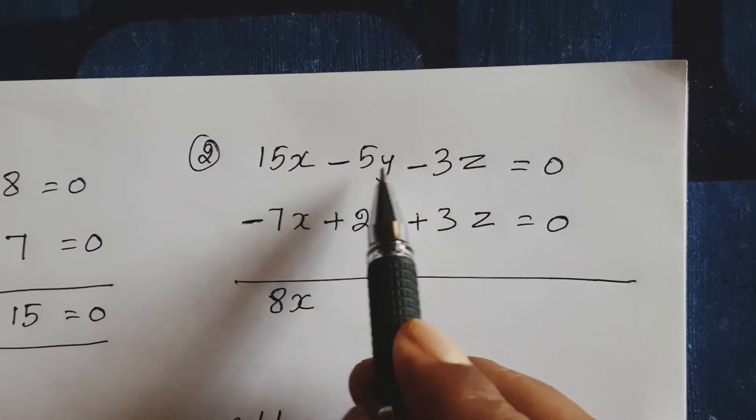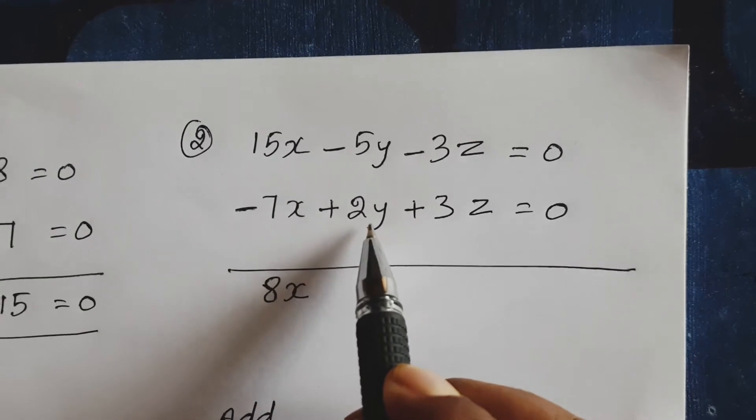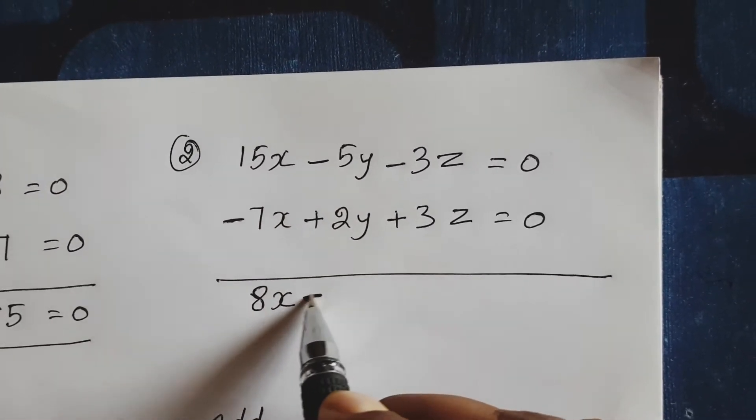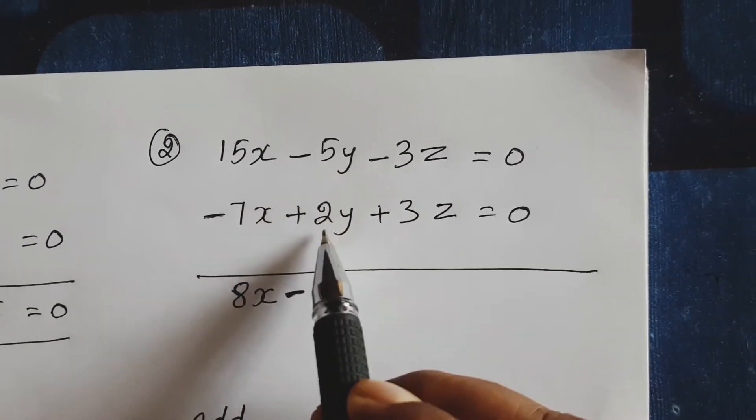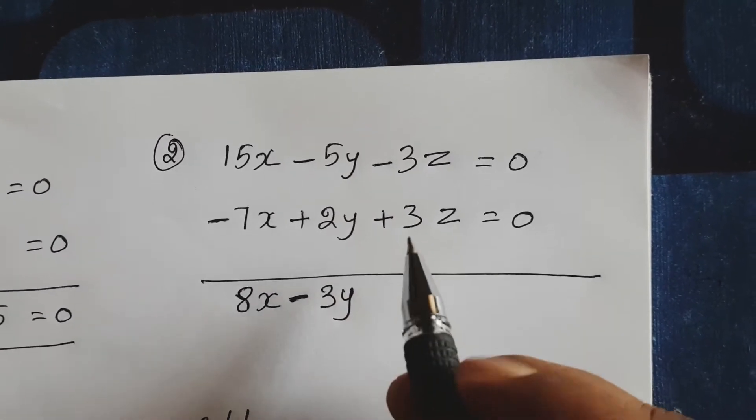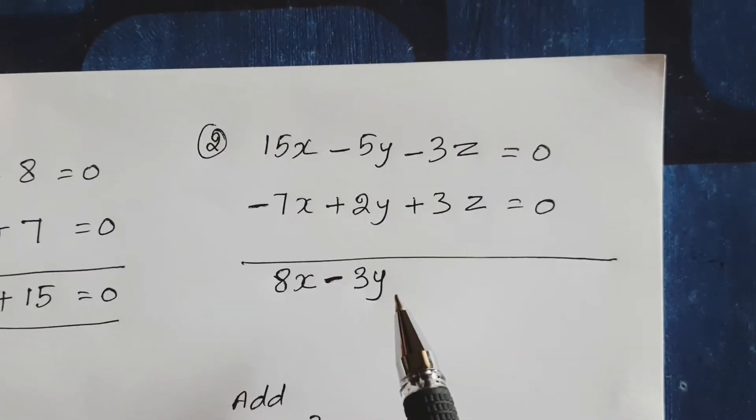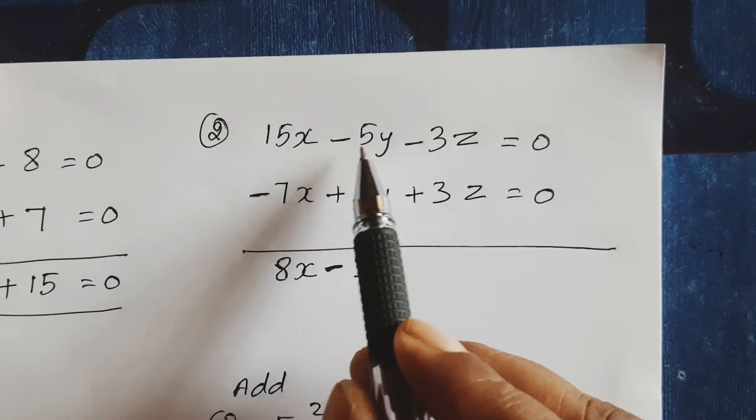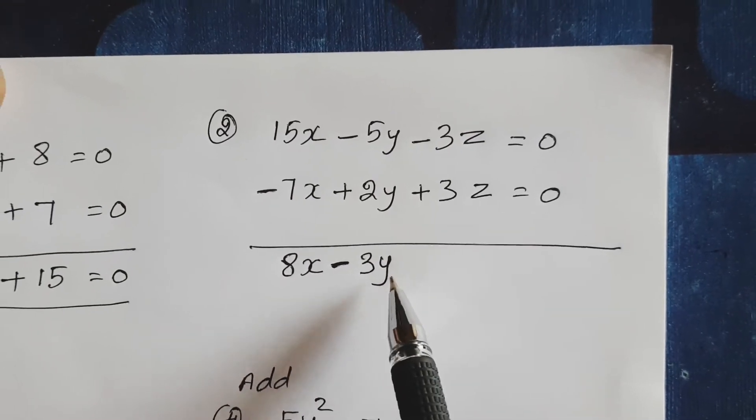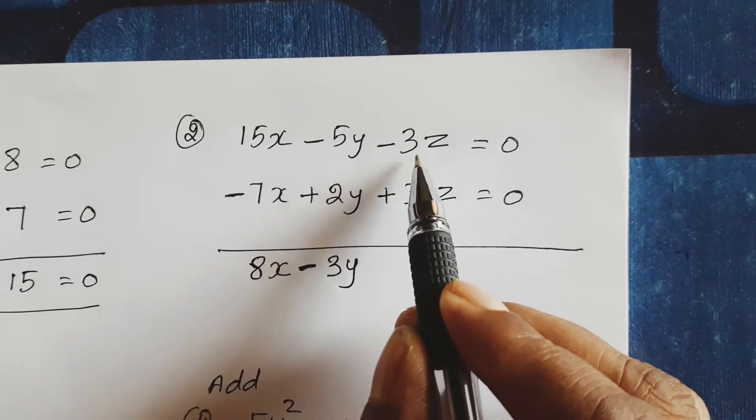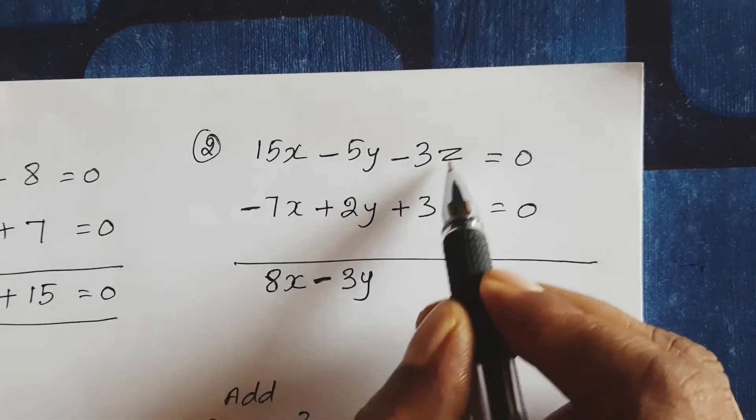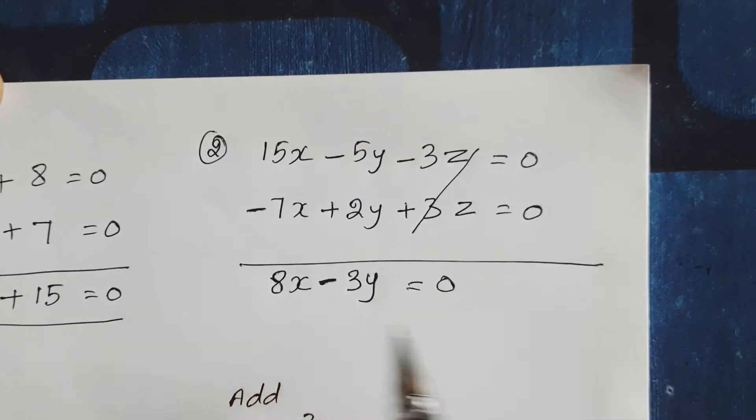Here minus 5y plus 2y. Negative sign is higher value, so minus sign. 5 minus 2, so 3y, negative 3y. Here minus 3z plus 3z, so positive and negative both are cancelled. Equal to 0.